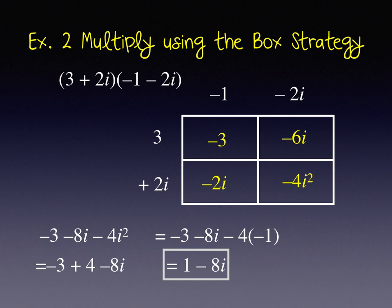So let's check the structure of our box and make sure we can see where those pieces of our complex number came from. The real part of our product comes from this diagonal: negative 3 plus 4. And the imaginary part comes from this diagonal. So my product is 1 minus 8i.